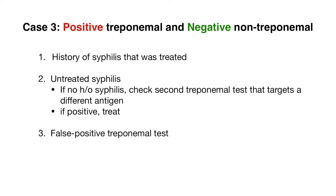If the patient has never been treated for syphilis, you can check a second treponemal test — not a non-treponemal test — that targets a different treponemal antigen. If that second test is positive, you can consider this a positive syphilis result and treat the patient. If the second treponemal test comes back negative, you can consider the first positive treponemal test a false positive. This can happen, but it's less common.